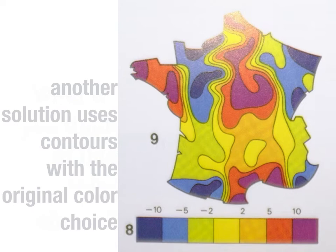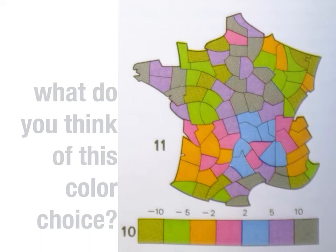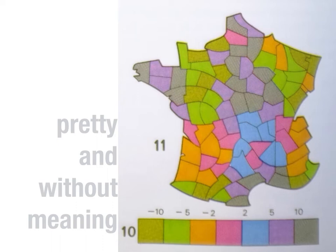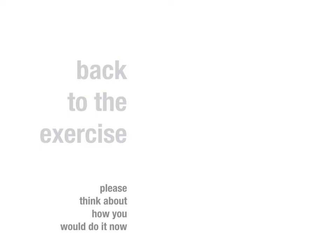Here's another solution with contours in the original color choice. Bertin then asks what you think of a particular color choice — you may want to pause the video while you consider it. Bertin's verdict is that it's pretty and without meaning. These colors don't do anything to help us understand where the statistic is large or small in any given county. So please think about how you would change your picture now.